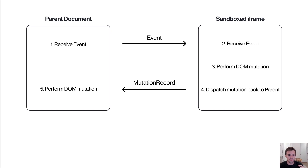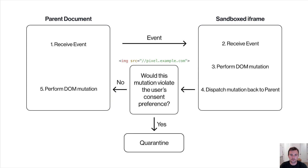We would sync between the parent document and the sandbox iframe. If the script in the sandbox appends an image to the document, before allowing that mutation to be synced back to the parent document, we inspect it to see if it would violate the user's consent preferences by inspecting the mutation record being dispatched back up. So we can ask: would this DOM mutation violate the user's consent preference? In this case, the mutation imports an image which is a pixel tracker — so it would be quarantined if the user had opted out or not yet opted in.